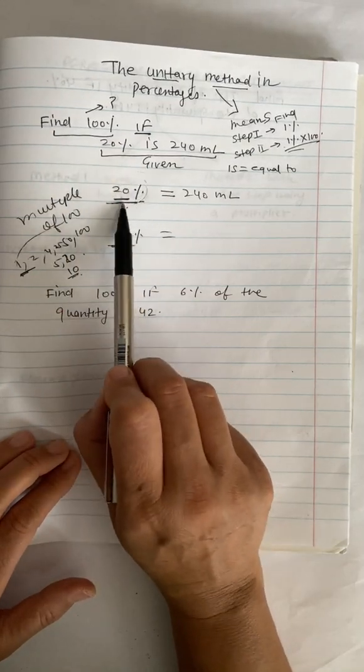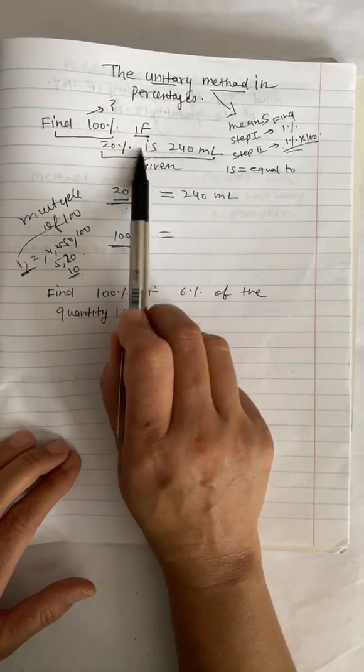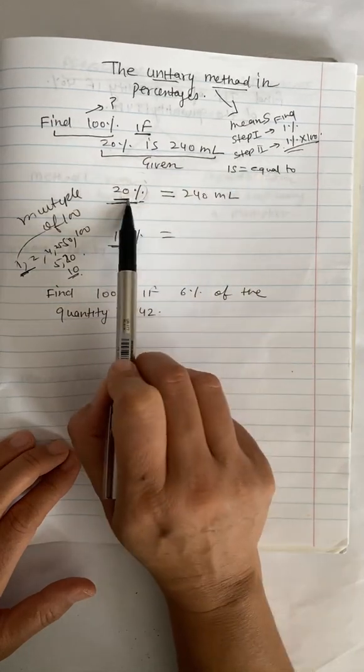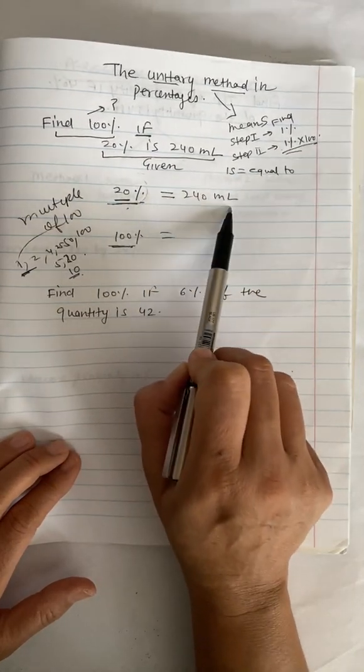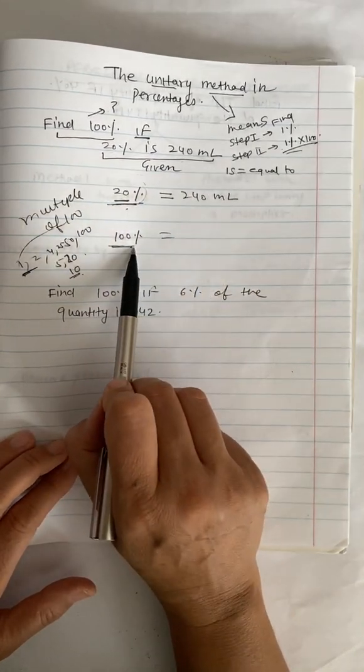I will set up: 20% is equal to 240 ml, and now we need to find 100%. Now, if the given percentage is a multiple of 100...